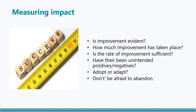Unintended consequences can be positive, but they can also be negative. For example, a pupil attending one-to-one support for emotional regulation at the same time each week may be unhappy at repeatedly missing PE. Where an intervention is not delivering the required impact, schools should not be afraid to review the plan, adapt the intervention as appropriate, or even stop the intervention and take a different approach.